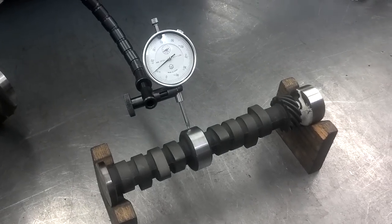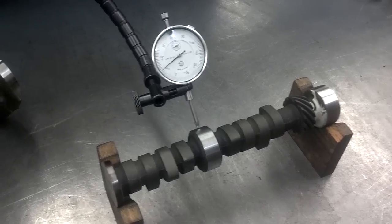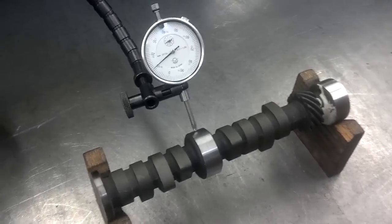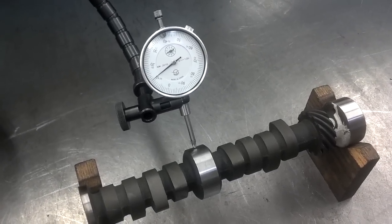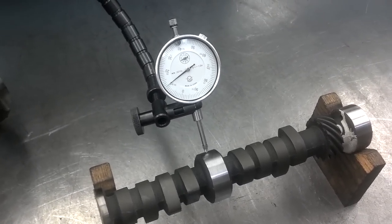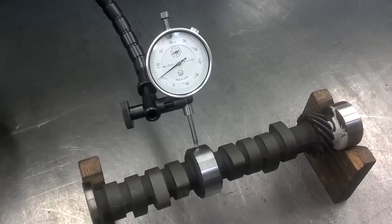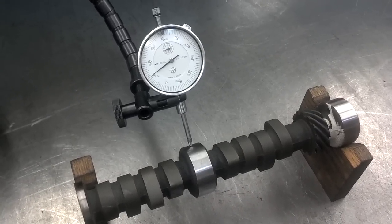This video is going to demonstrate how to measure a camshaft. The two measurements that you want to take on a camshaft are run-out and lobe lift. We'll do this using a dial indicator, and then we'll show how it can be done with a micrometer also.